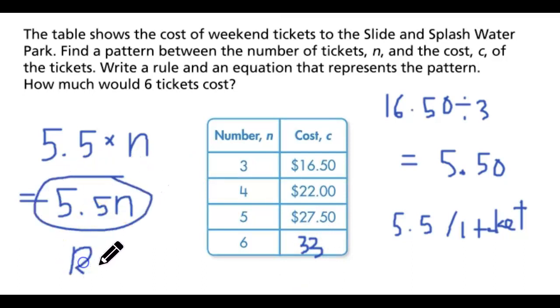The rule applies in every single part of the table. 5.5 times 3 gives you 16.50, 5.5 times 4 gives you 22, 5.5 times 5 gives you 27.50, and 5.5 times 6 will give you 33.